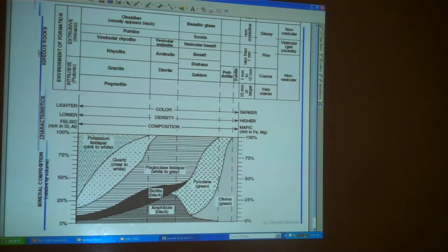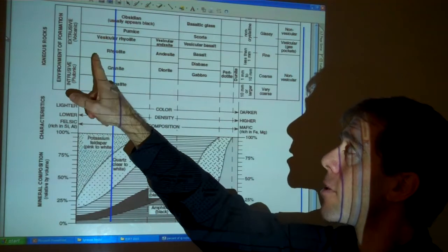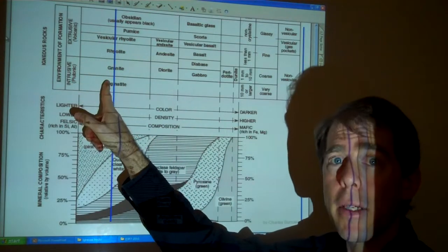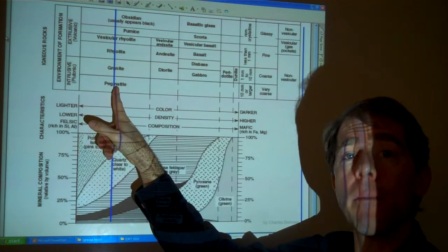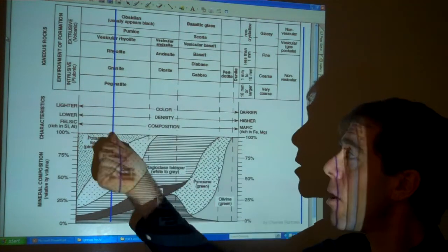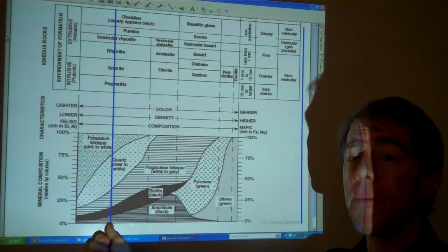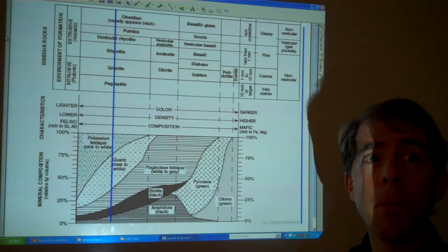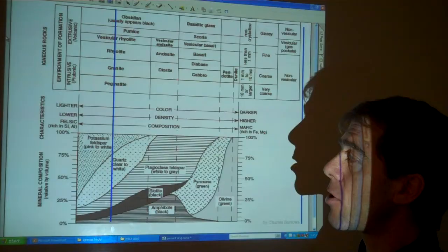Let me show you what you're going to do. If you take a rock sample and if I were to draw a line on the reference table right here, these samples - obsidian, pumice, vesicular rhyolite, rhyolite, granite, and pegmatite - all have the same composition in terms of the minerals in them. They have potassium feldspar, quartz, plagioclase feldspar, biotite, and amphibole. They have all the same minerals. But the question is, what's the percentage of each of those?